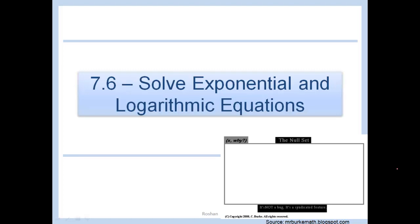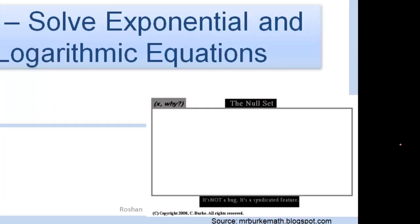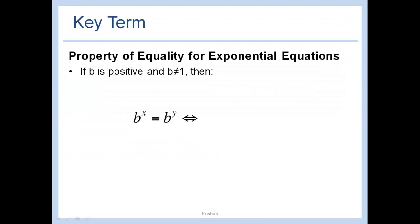7.6 exponential and logarithmic equations. The property of equality for exponential equations is extremely obvious. If b to the x equals b to the y, then x is equal to y. Same basis, then the exponents must be equal to one another.